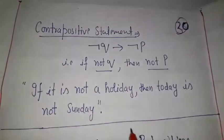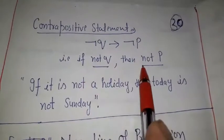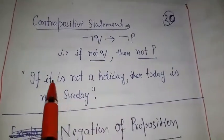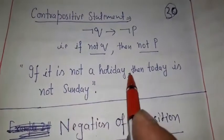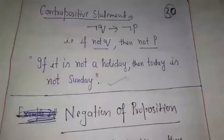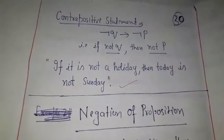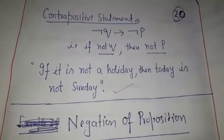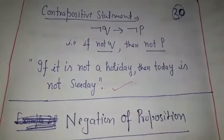The contrapositive of P implies Q is not Q implies not P, that is 'if not Q then not P'. Not Q means 'it is not a holiday' and not P means 'today is not Sunday'. So the contrapositive is: 'if it is not a holiday then today is not Sunday.' So for any implication P implies Q, converse is Q implies P, inverse is not P implies not Q, and contrapositive is not Q implies not P.